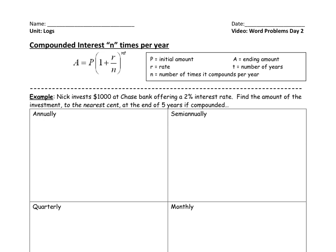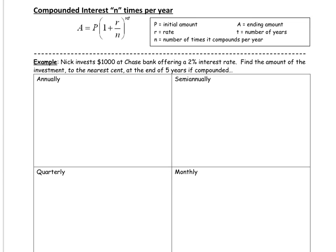Let's look at an example. It says that Nick invests $1,000 at Chase Bank offering a 2% interest rate. Find the amount of the investment to the nearest cent at the end of five years if it's compounded each one of these five ways.